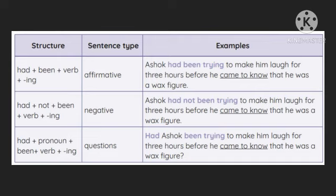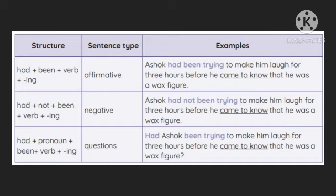Negative: had + not + been + verb + ing — Ashok had not been trying to make him laugh for three hours before he came to know that he was a wax figure. Question: had + pronoun + been + verb + ing — Had Ashok been trying to make him laugh for three hours before he came to know that he was a wax figure? To summarize: present perfect continuous shows an action that started in the past and still continues; past perfect continuous shows an action that started in the past, continued for some time, and ended in the past.